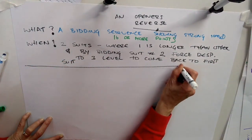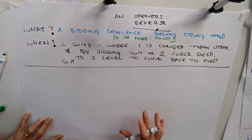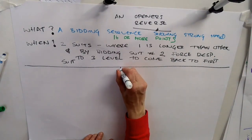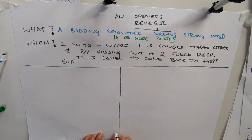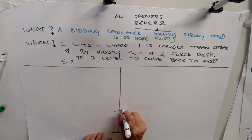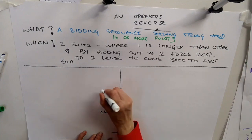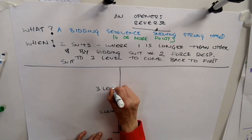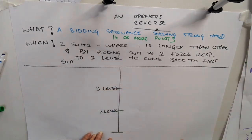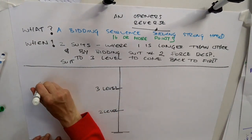The best way to demonstrate it is to do a bidding ladder. Imagine the end of the one level is here, so the two level starts here, and the three level starts here. Let's give the Opener this hand here.